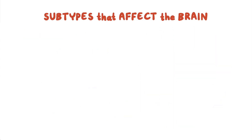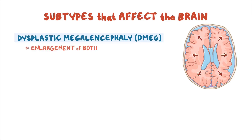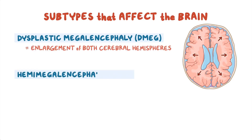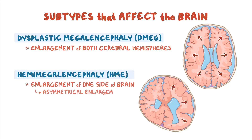Conditions include dysplastic megalencephaly, known as DMEG, which causes enlargement of both cerebral hemispheres. Hemimegalencephaly, or HME, causes enlargement of one side of the brain, which results in asymmetrical enlargement and can lead to severe seizures.